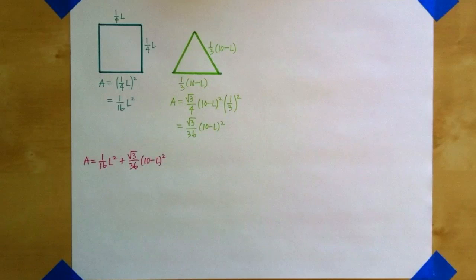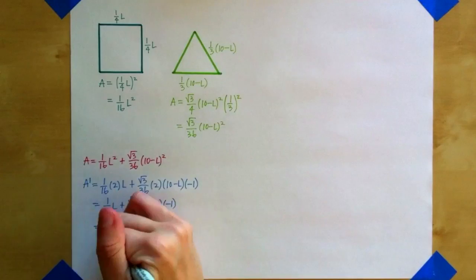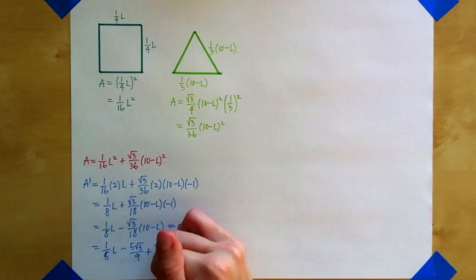To get total area, I just add the area of the square to the area of the triangle. This is the equation I want to optimize to find the value of L that minimizes and maximizes total area. To do this, I'll take the derivative of my equation for A, set it equal to 0, and solve for L.